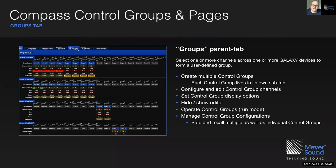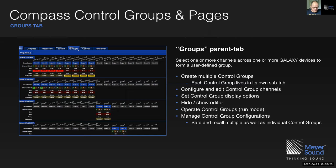Groups allow us to select multiple channels across multiple Galaxy devices — maybe two, three, or four Galaxy devices — grouping input or output channels in one convenient group. In the Groups tab, we can create, configure, edit, and operate those groups, and we can save and recall configurations.